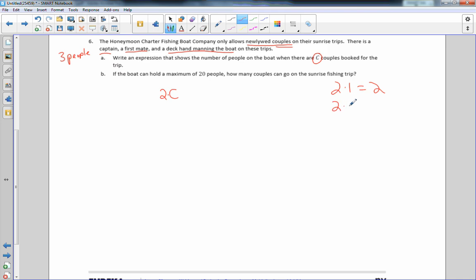If I have two people in a couple and I have two couples, so my C is two, two times two equals four. So if I have two couples I have four, and so on. So two times three couples would be six people.